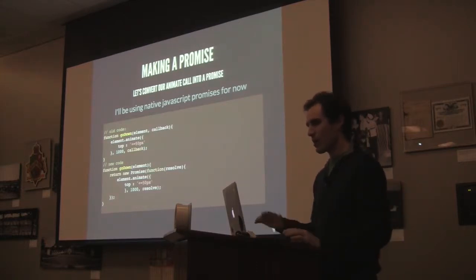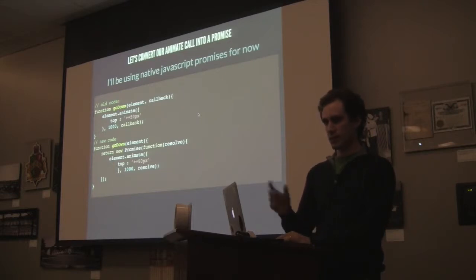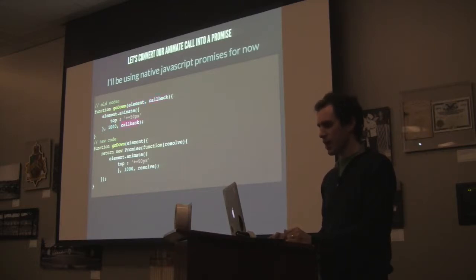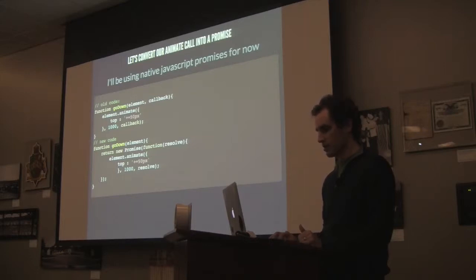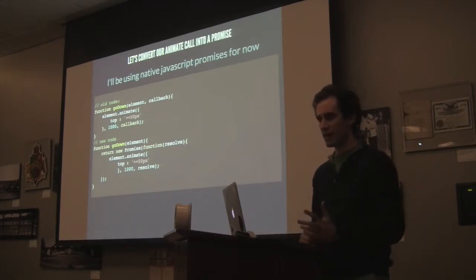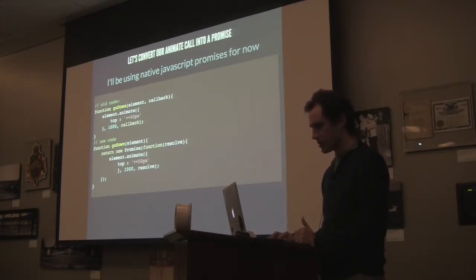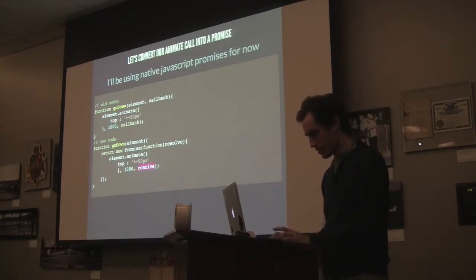Let's convert one of our callbacks into a promise. I'm going to use native JavaScript promises because they have a feature I like over my previous favorite library, Q.js. Here's our old code — go down, just element.animate, taking an element and a callback. For promises, it's very similar: we return a new Promise, passing in a function that takes resolve and reject. Since jQuery animate can't really fail, we'll simplify error handling. When the animation is done, we just call resolve. That's it — really simple so far in terms of creating a basic promise.